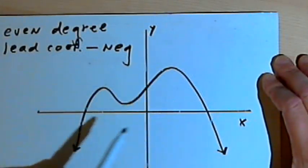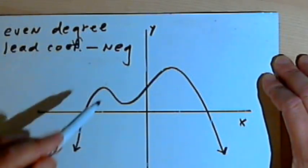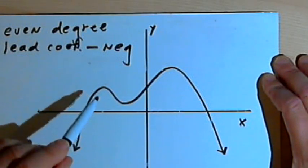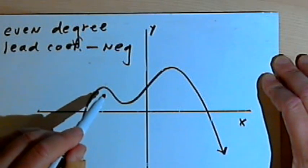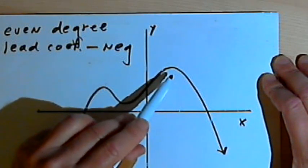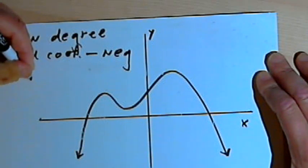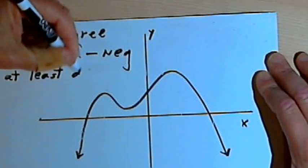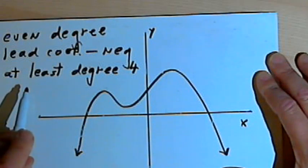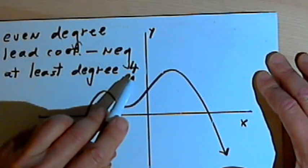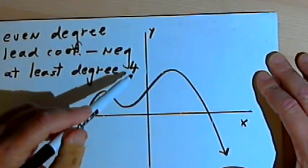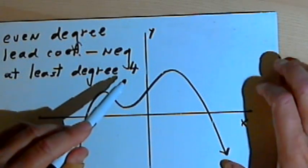I can also look at the number of turning points and find something out about what the degree might have been. I've got three turning points here and we've got a general rule that says that the degree had to be at least one more than the number of turning points. So we'll take that three turning points and add one, and that means that this was at least degree 4. If it wasn't degree 4, then the next possible degree would be degree 6 because it's got to stay even. So this is at least degree 4, but it could be degree 6 or 8 or 10 or any other even number.